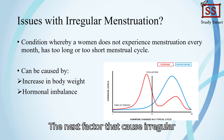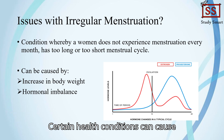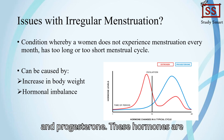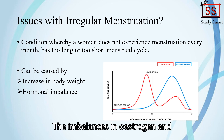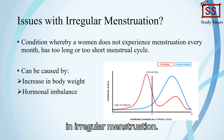The next factor that causes irregular menstruation is hormonal imbalance. Certain health conditions can cause fluctuations in hormones like estrogen and progesterone, which are essential for a regular menstrual cycle. Imbalances in estrogen and progesterone levels in the body can result in irregular menstruation.